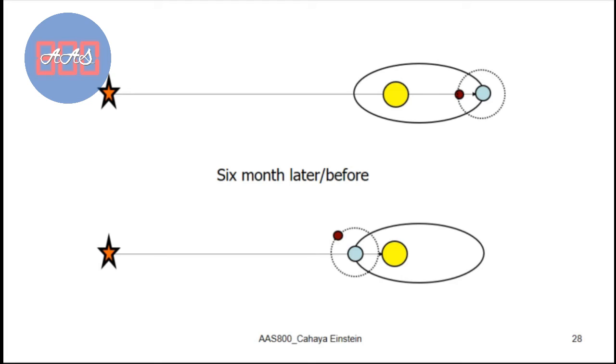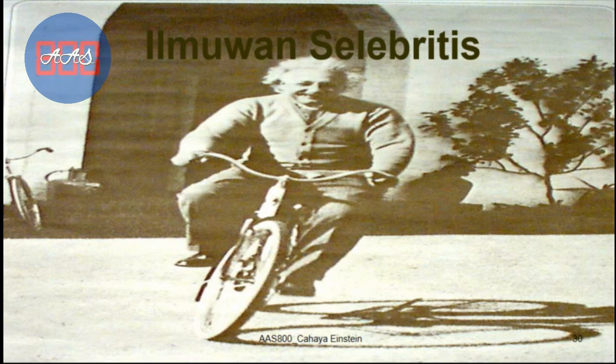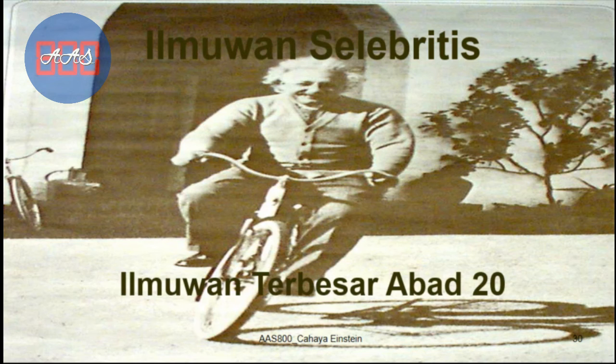That moment came, the total solar eclipse of May 29, 1919. There was an eclipse observation expedition led by astronomer Eddington, and in fact, indeed, the star was observed. In other words, the starlight was deflected when passing through a massive object, which is the sun. And that simultaneously confirmed what is called Einstein's space-time curvature, from its curved light. And as soon as this was published, Einstein at that time became a celebrity scientist, and was crowned as the greatest scientist of the 20th century.